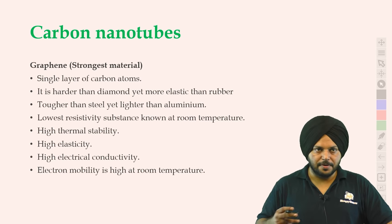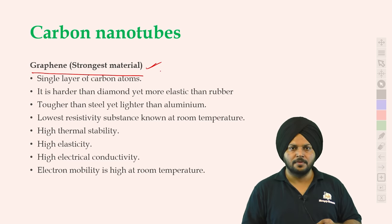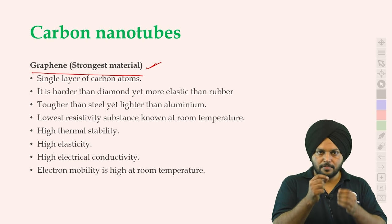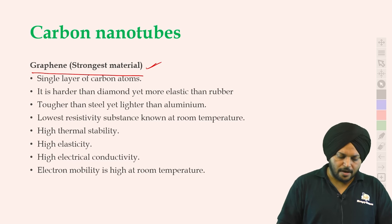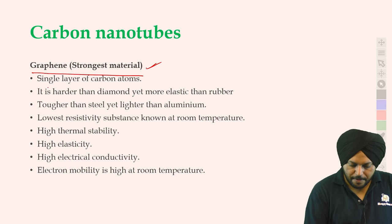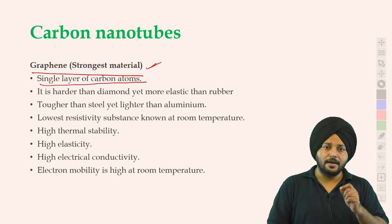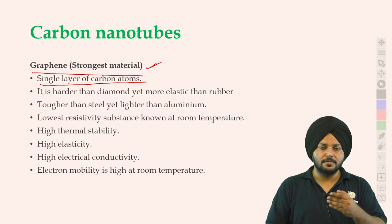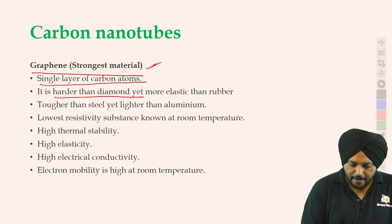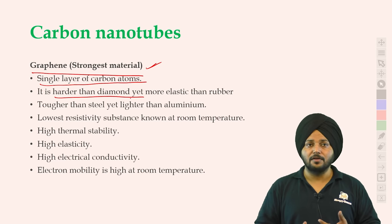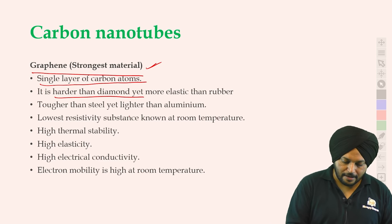उससे पहले एक चीज पढ़ते हैं — graphene। आपने ये काफी बार सुना होगा। इसको strongest material बोला जाता है। यह बहुत thin है, लेकिन इसकी properties बहुत अलग हैं। Harder than diamond, yet बहुत elastic है, rubber की तरह। Tougher than steel, yet lighter than aluminium।